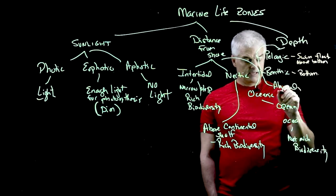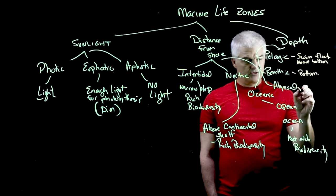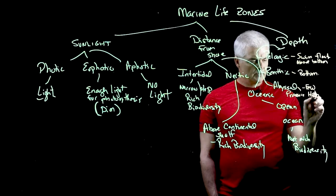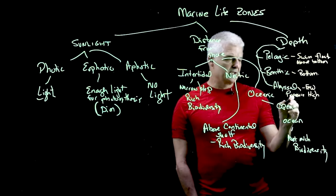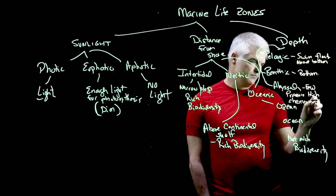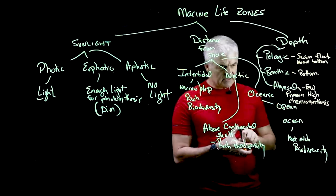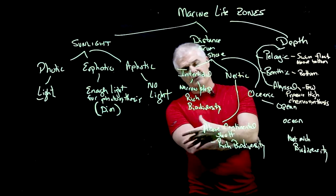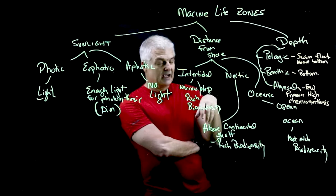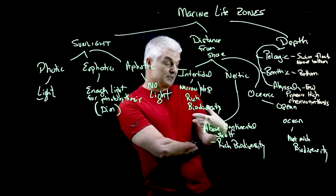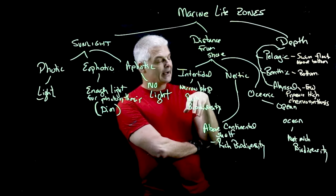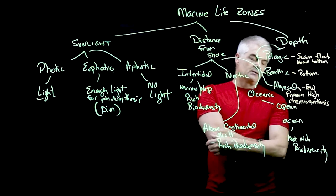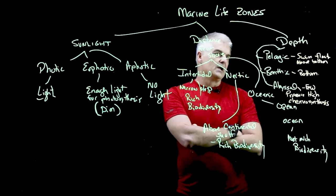The pressure in the abyssal zone is extremely high, but there are a few creatures that get their energy from something called chemosynthesis. We didn't think there were living things at the deepest parts of the ocean, but because of volcanic vents, there's energy coming from the earth's interior. Certain creatures have adapted to get their energy not from the sun, but from the volcanic vents — that's what we call chemosynthesis.